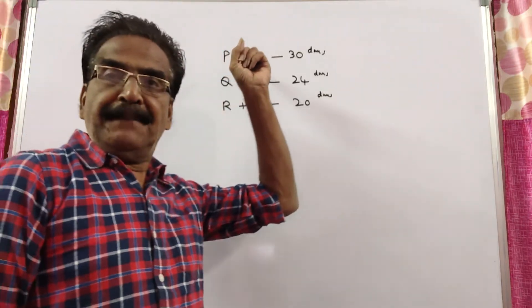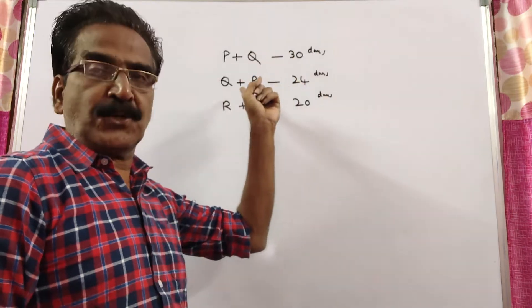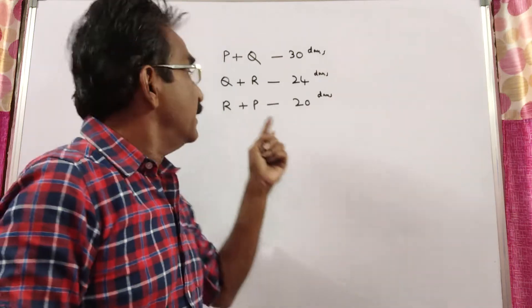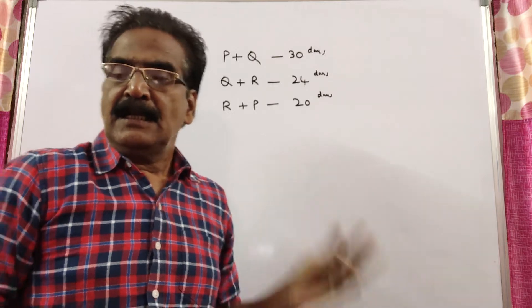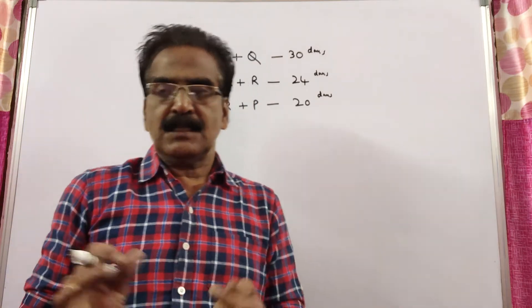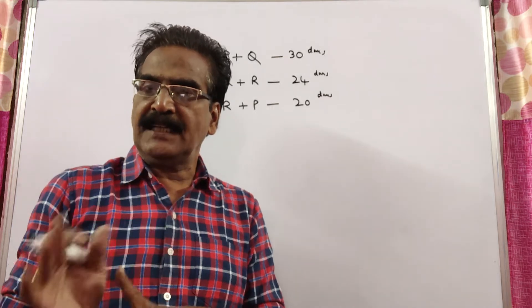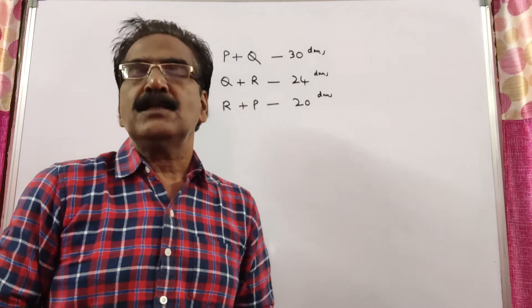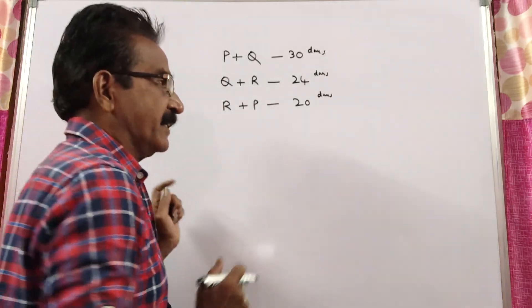See friends, P and Q can complete a work in 30 days, whereas Q and R together can complete in 24 days, where R and P in 20 days. Now, P and Q are started working together and after 10 days, Q and R left. So, in how many more days P can complete the remaining work?